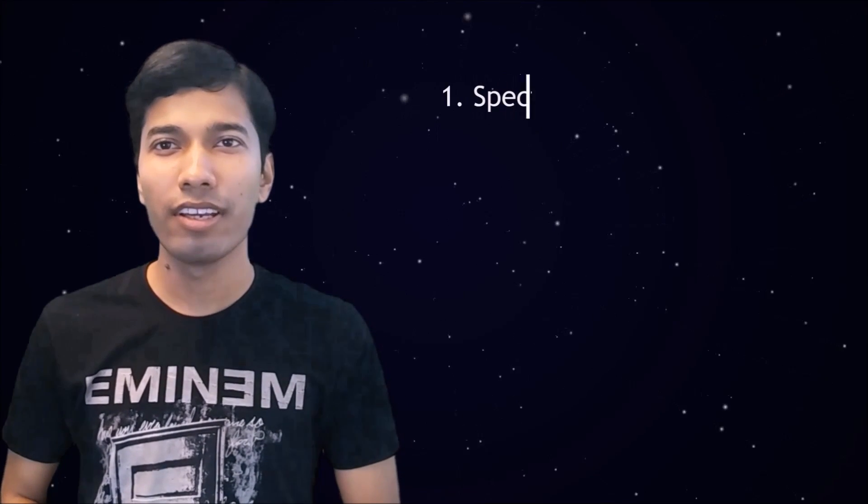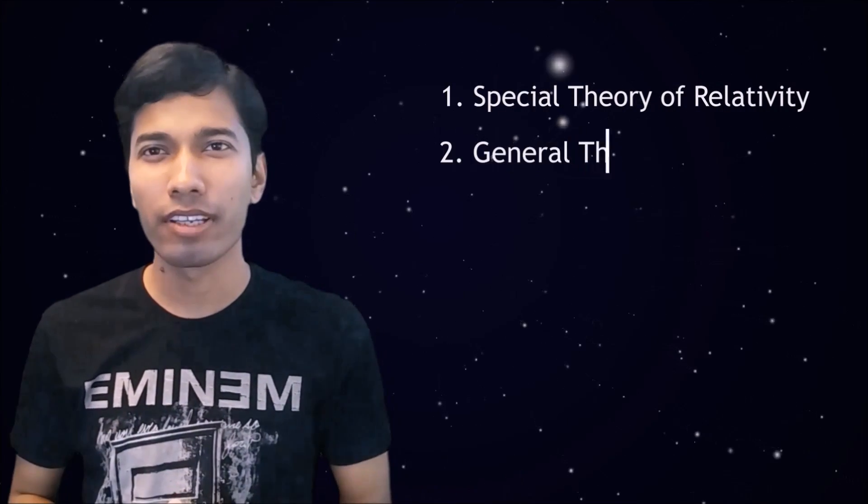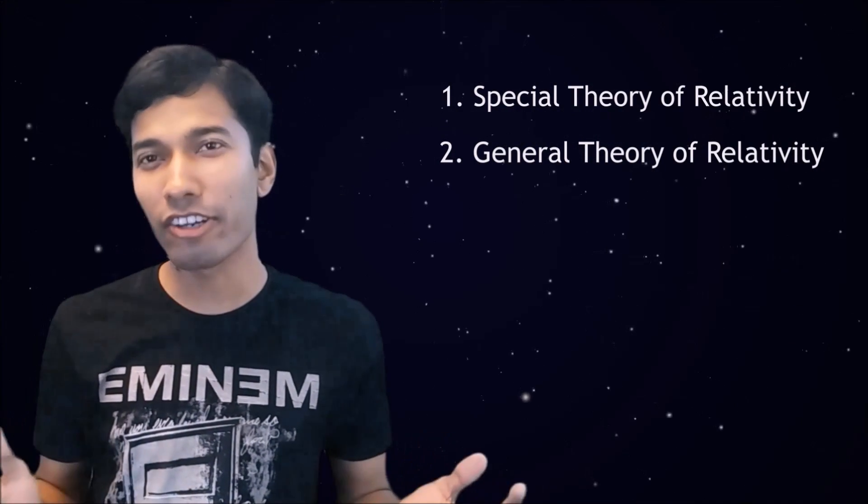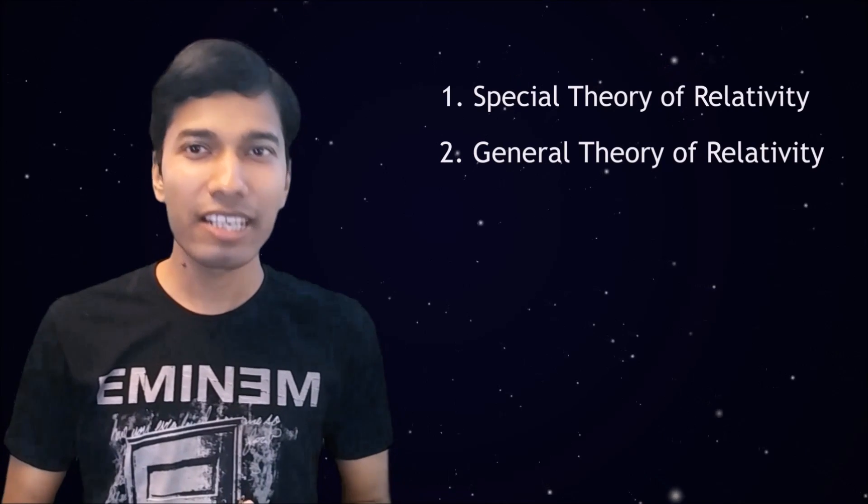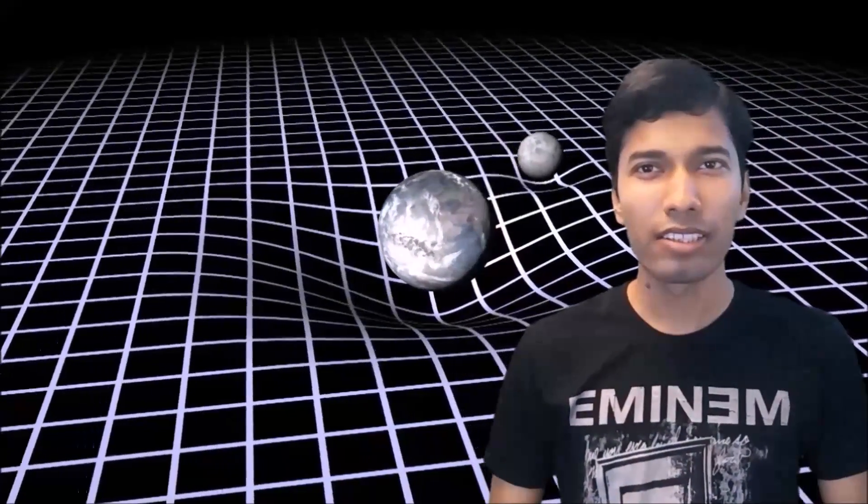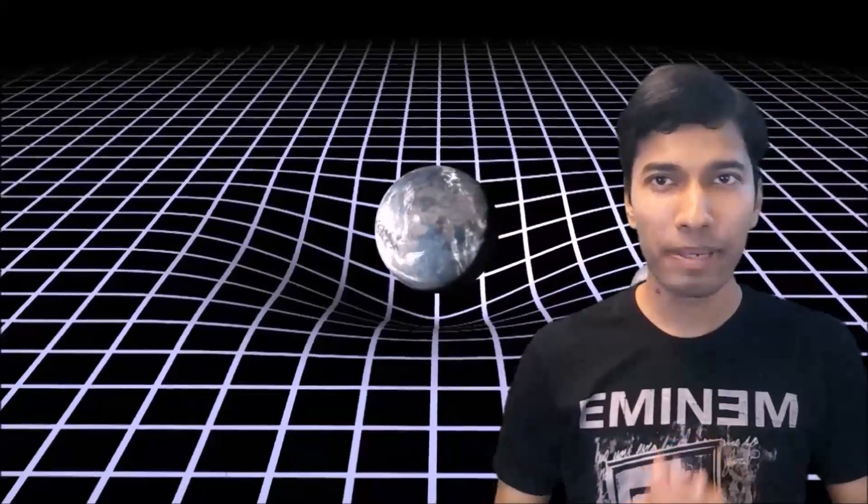In the early 20th century, Einstein proposed his two theories of relativity: special theory of relativity and general theory of relativity. Special theory of relativity is famous for the equation E equals mc squared, and general theory of relativity describes gravity in a completely new way. According to it, mass and energy bend space and time.